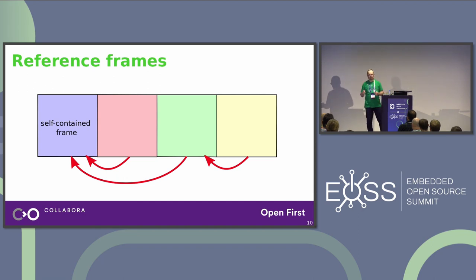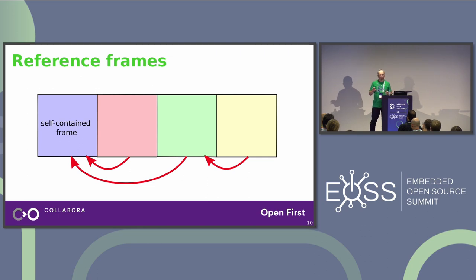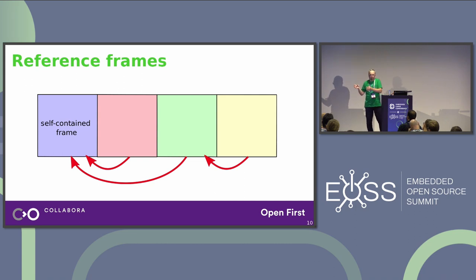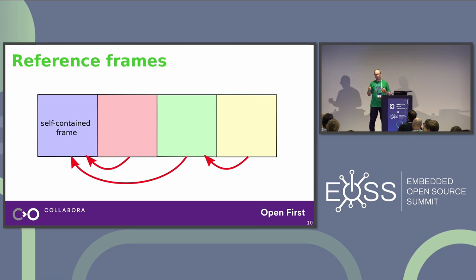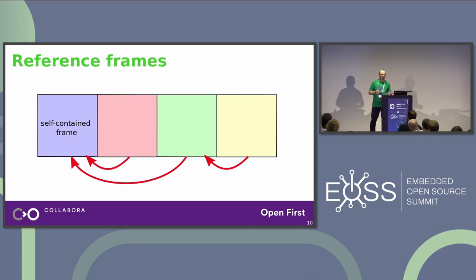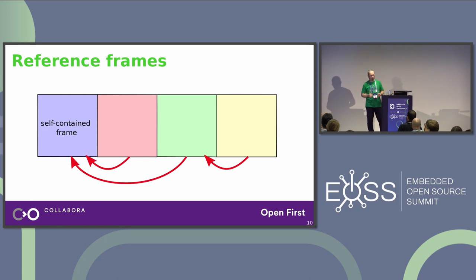In video codecs there are two strategies to predict the contents of the next portion of data. The first is intra prediction, referring to an already processed part of the current frame — such a frame is self-contained, sometimes called a keyframe. The second is inter prediction, which requires reference frames to decode. Reference frames can depend on other frames, generating a complicated set of dependencies.